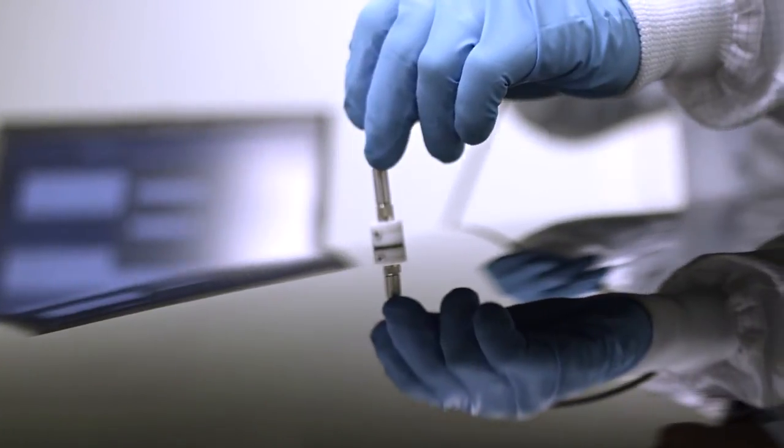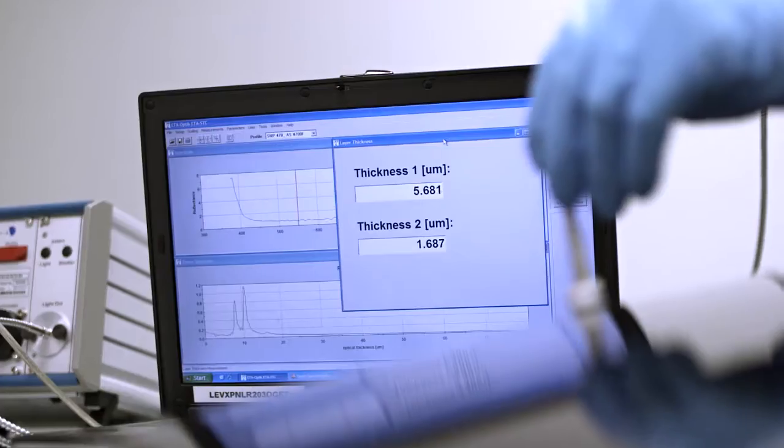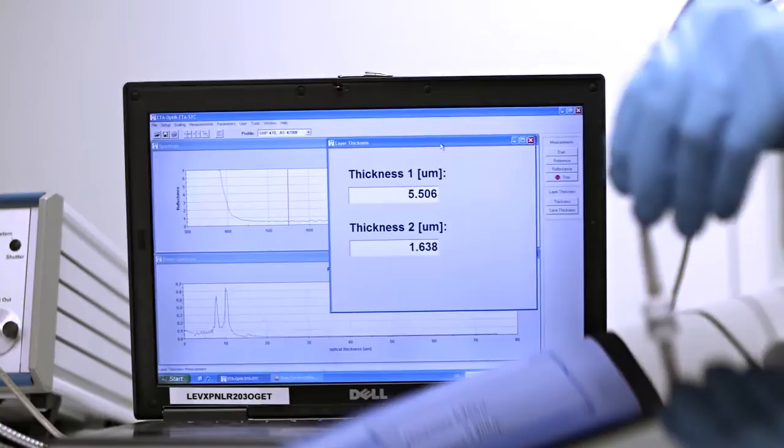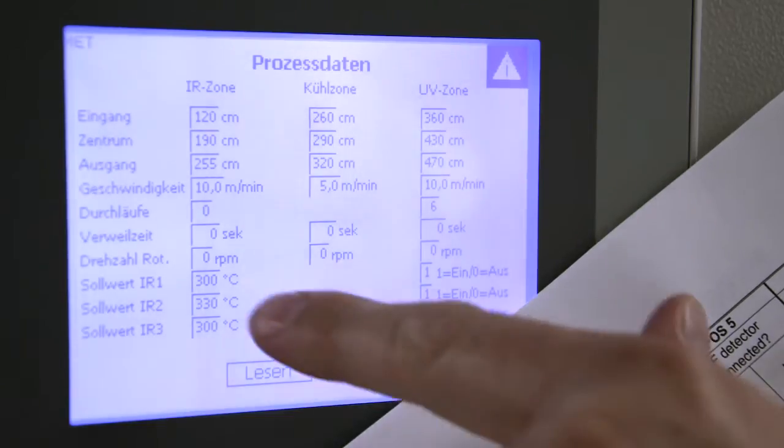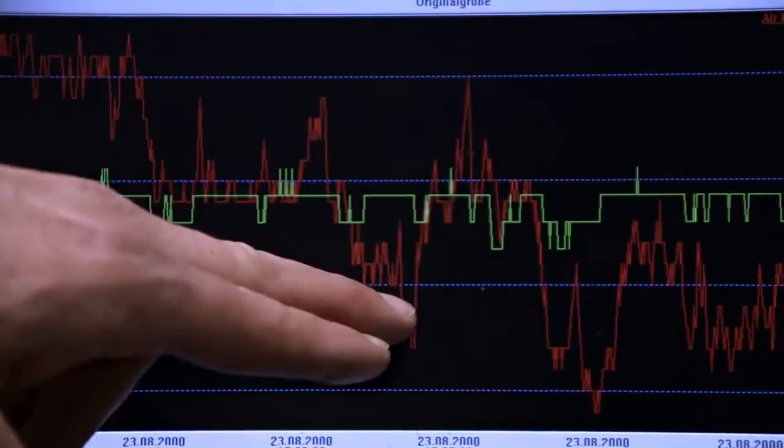In order to help the customer to see whether his components will pass the requirements, we can change and alter the air velocity on our pilot line. By doing that, we can see how the hard coat flows across the surface and across the edges. We can give him a good view on a potential mass production operation at his facility.